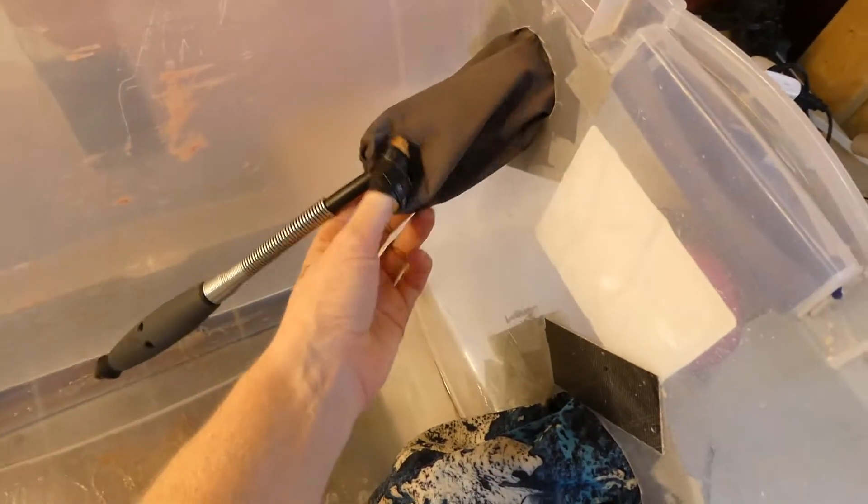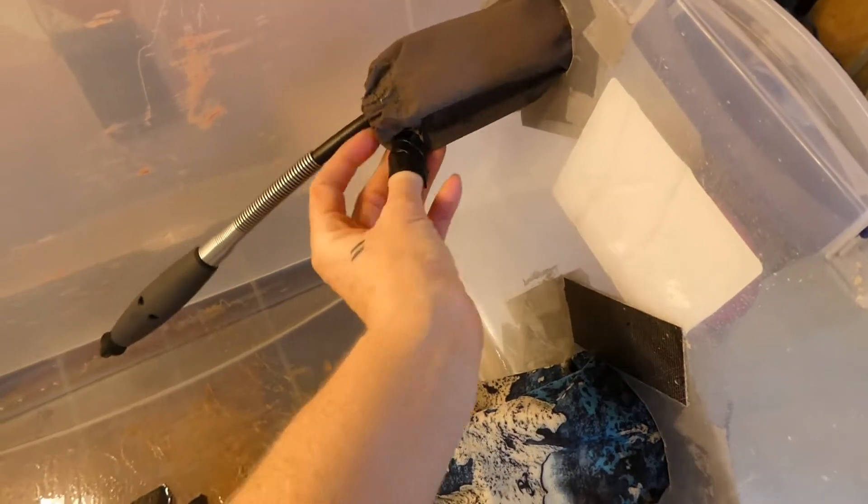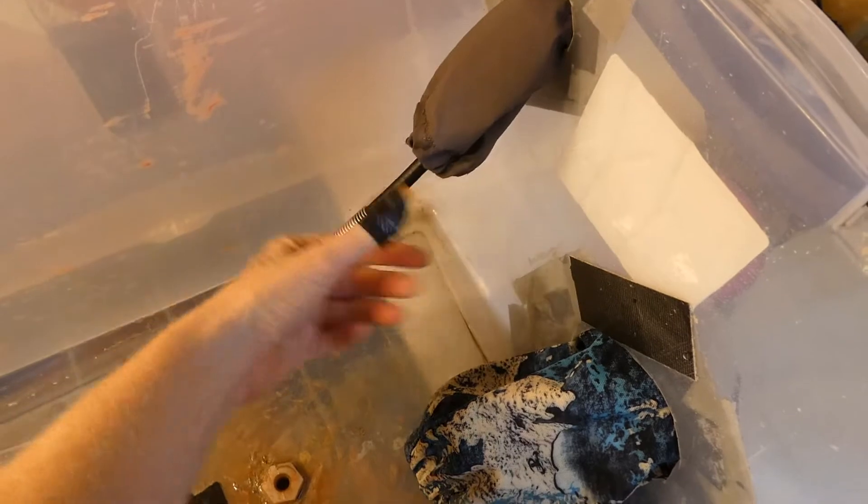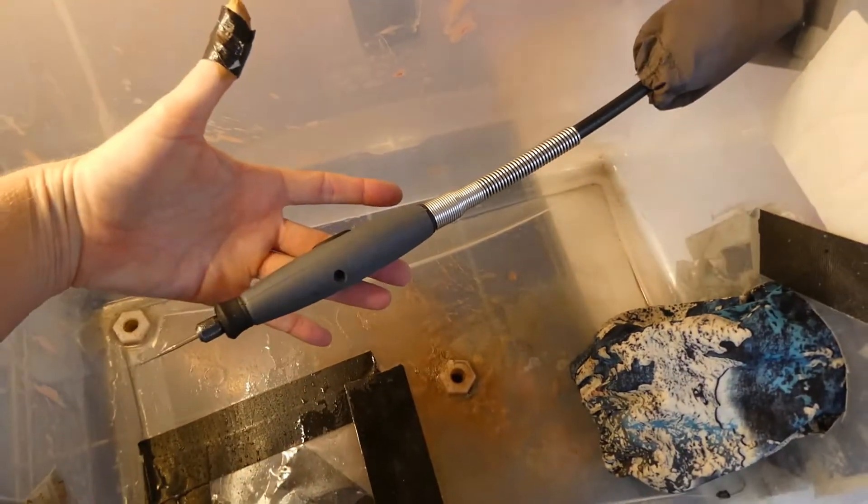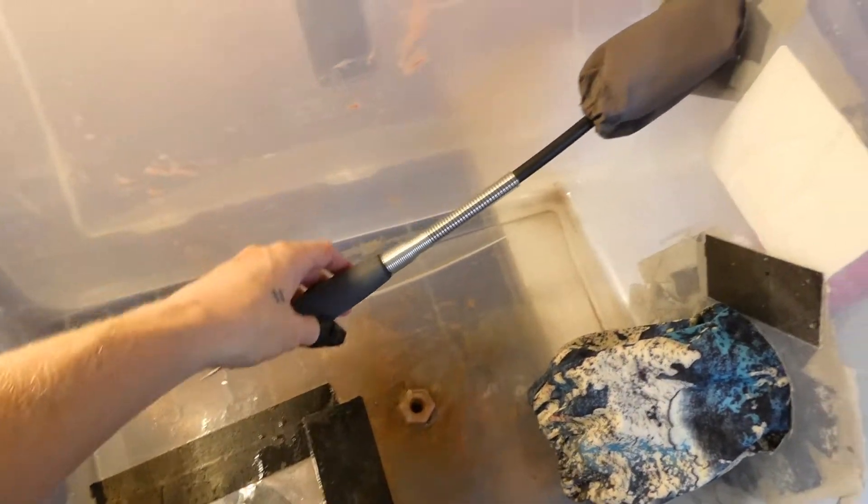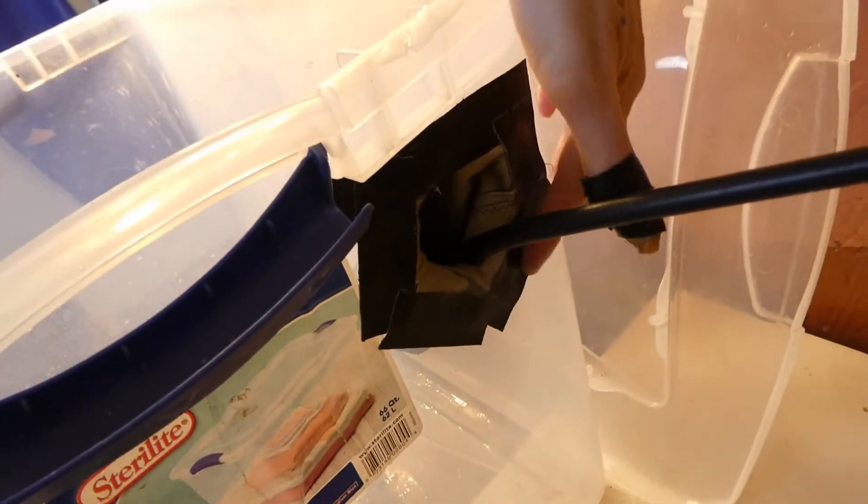Then I made this little sleeve with some elastic inside here to try to help tighten it around where my Dremel flex shaft comes through it, and then I've just taped it here on the outside.